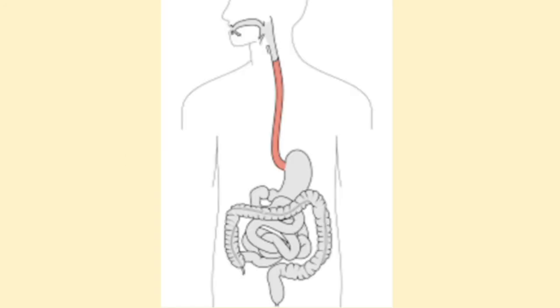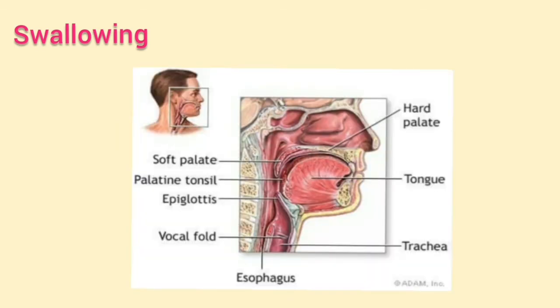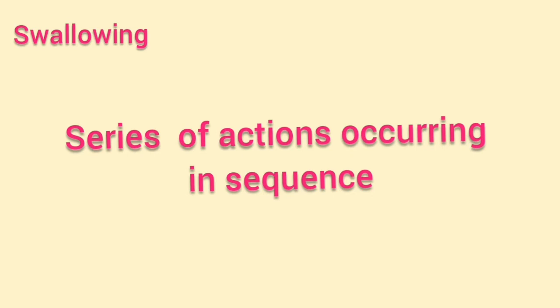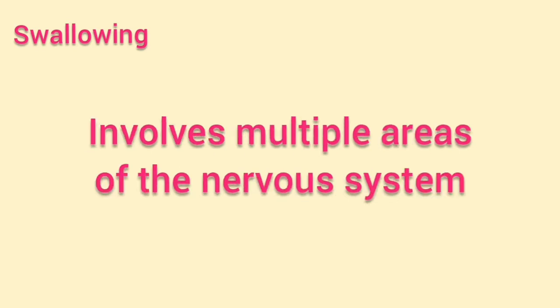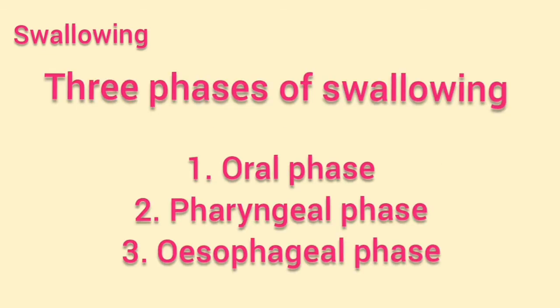The next part of the alimentary canal is the esophagus. Let us understand swallowing — how food is swallowed and sent into the esophagus. Swallowing is actually one of the more complicated processes, which seems simple but involves a series of actions occurring in sequence, engaging multiple areas of the nervous system, with both voluntary and involuntary or reflexive actions involved.